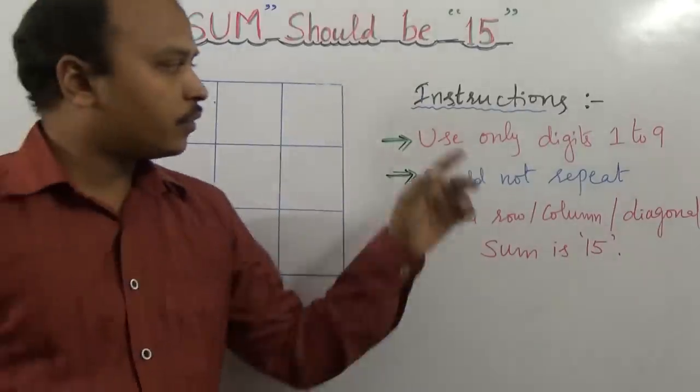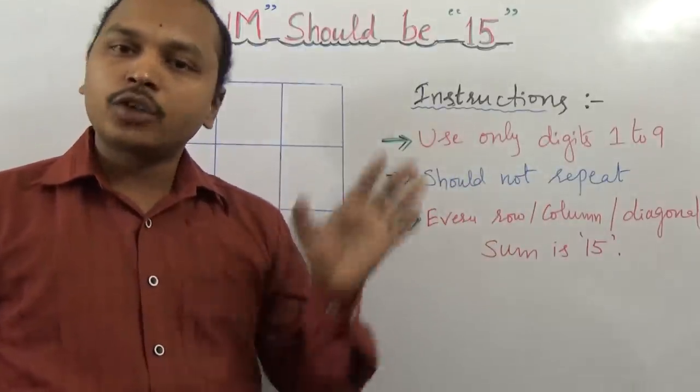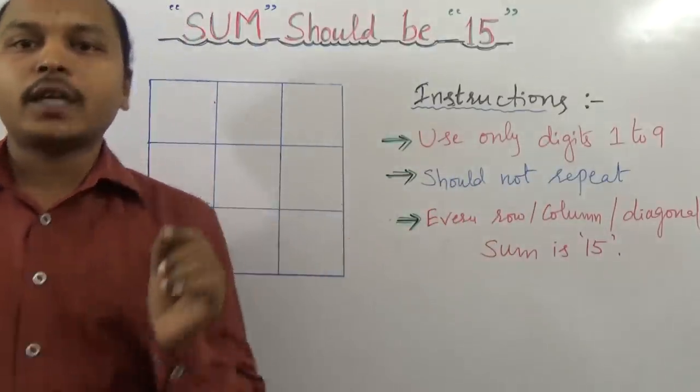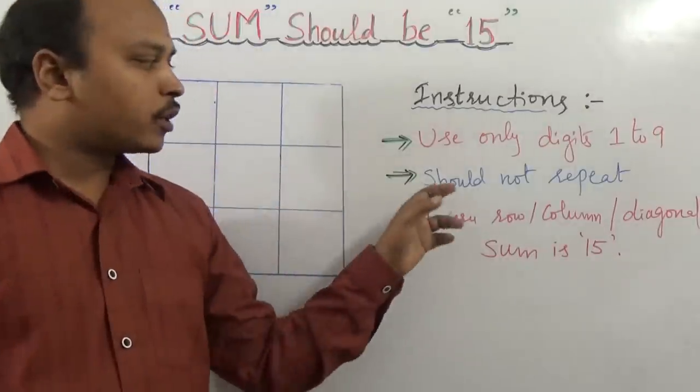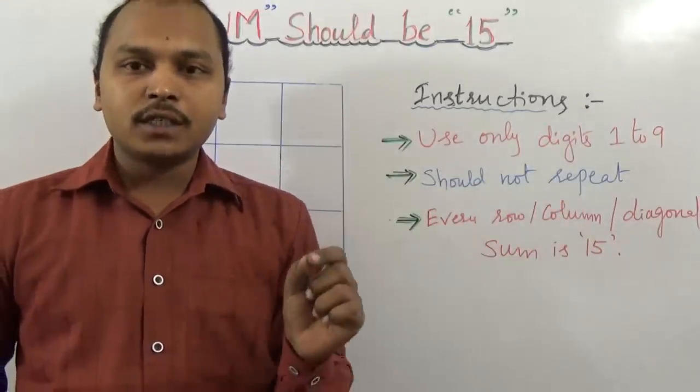The first condition is we need to use only digits from 1 to 9. So in nine boxes, we need to keep nine digits. The second condition is you should not repeat. So if any digit is in one box, the same number should not repeat.